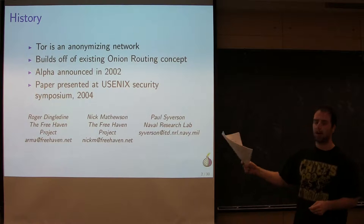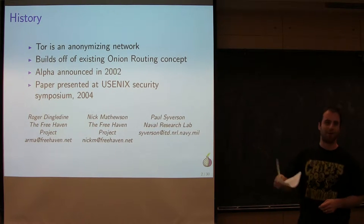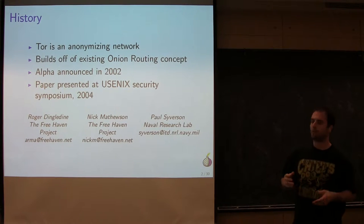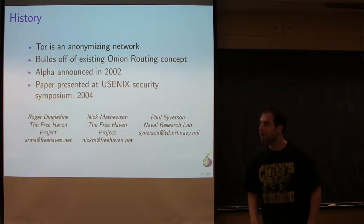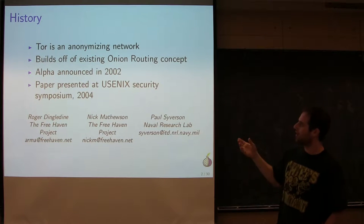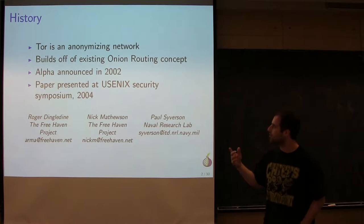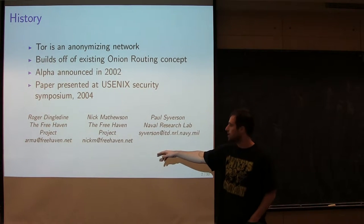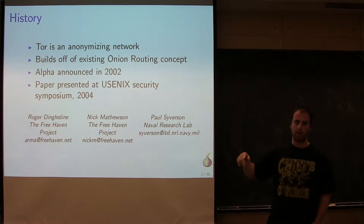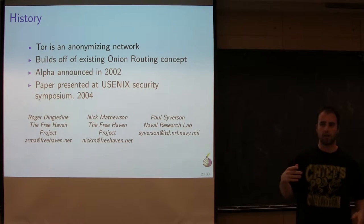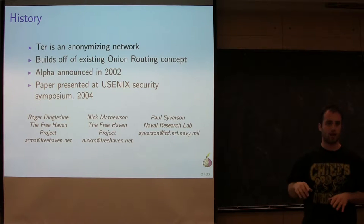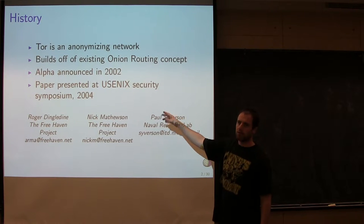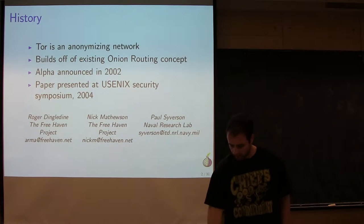Tor is a network to allow people to communicate with other people anonymously. The concept behind Tor was originally called onion routing, and it comes out of the Freehaven project, which is from MIT and the Navy. The original use of Tor was so that the military could communicate out on the internet anonymously. The Tor project itself started around 2002 and was published formally in 2004.